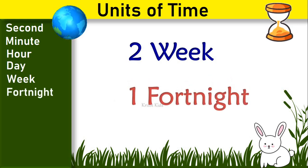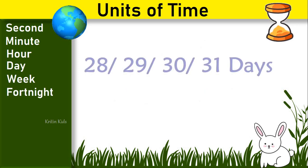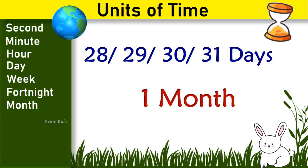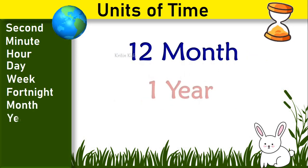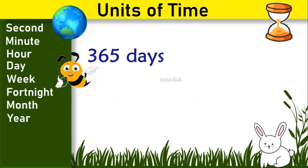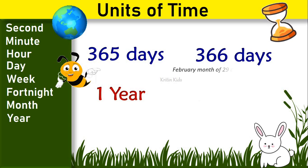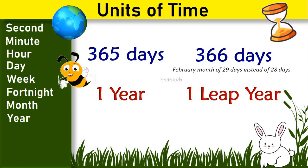2 weeks make 1 fortnight. 28, 29, 30 or 31 days make 1 month. 12 months make 1 year. 365 days make 1 year. And 366 days is a year in which the month of February has 29 days instead of 28 days. This year is called a leap year.